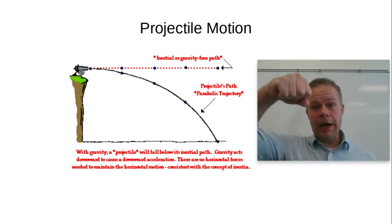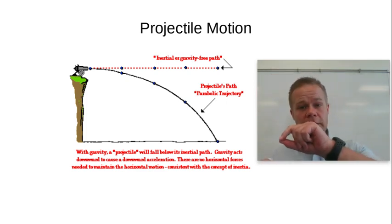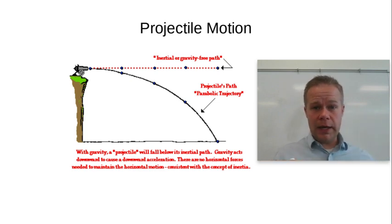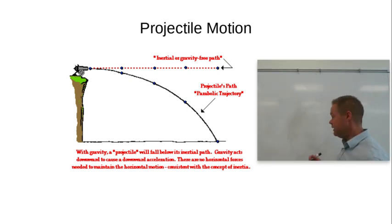Will the object that you drop hit first, or will the object that you shoot in a straight line hit the ground first? So here you can see I have a picture of a cannon off a cliff to sort of give this example here.